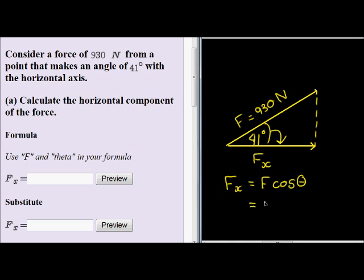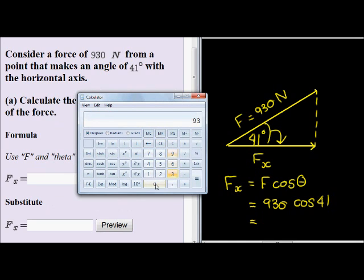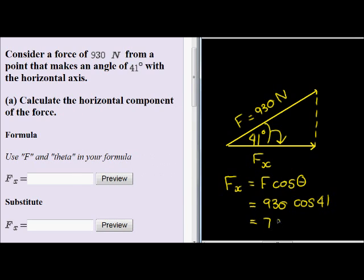The horizontal component of this force is equal to F times cos of theta. Now we can calculate that as 930 times cos of 41. Remember the unit is a Newton. Let me get my calculator. 930 times cos 41 equals 701.88. That's how much of this force is applied horizontally.